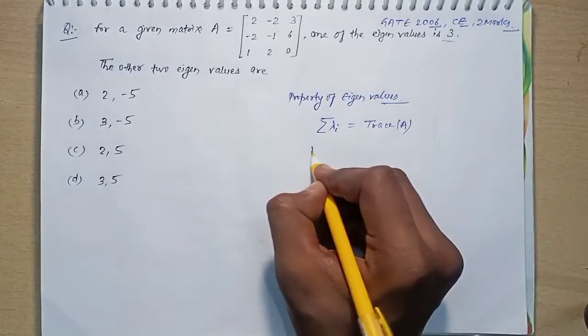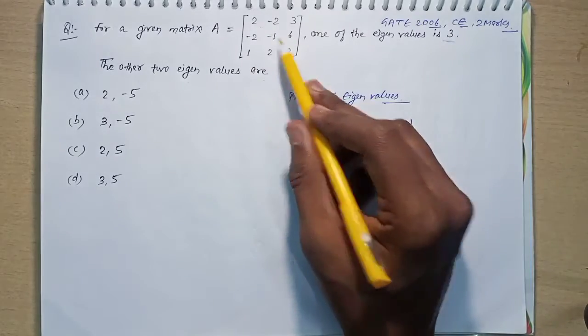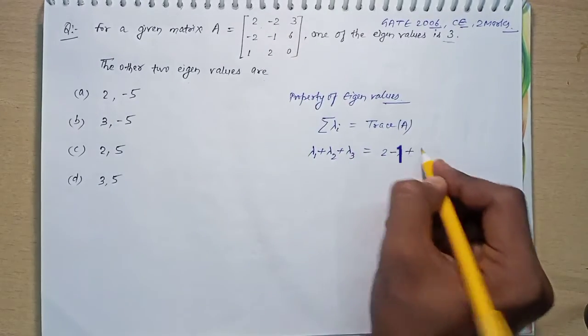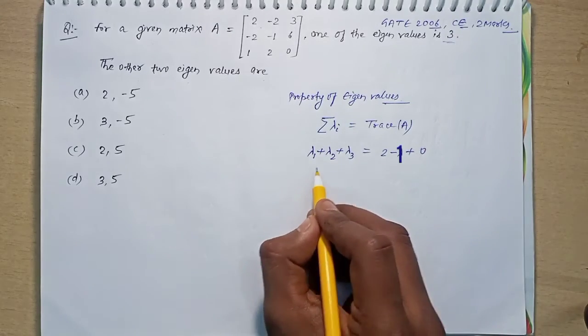So for a three by three matrix, it will be lambda one plus lambda two plus lambda three equal to the trace, that is the sum of the principal diagonal elements: two minus one plus zero. Since one of the eigenvalues given in the question is three,